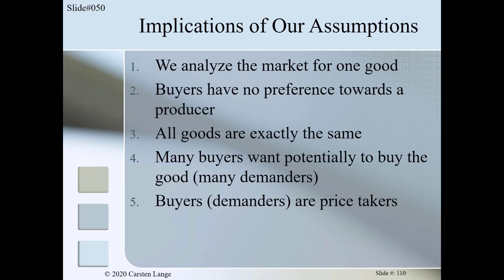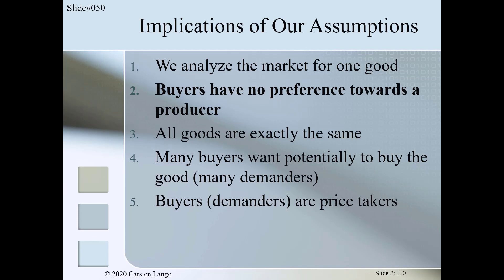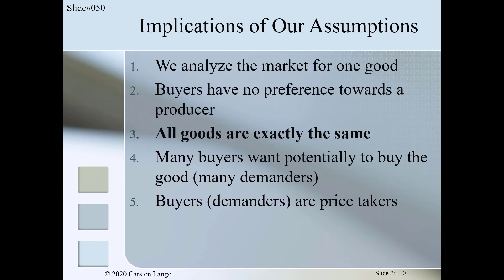The other assumptions also have implications. For example, assumption two — buyers have no preference towards a producer — is a strong assumption, since we know there are actually differences such as how friendly or unfriendly the service is, how reliable the producers are, or how far the consumer lives from the producer. By saying 'no preference towards a producer,' we neglect all these differences, pretending all producers are the same. The same is true for assumption three: all goods in the market are the same — we neglect quality differences, performance differences, and all other differences related to the good.